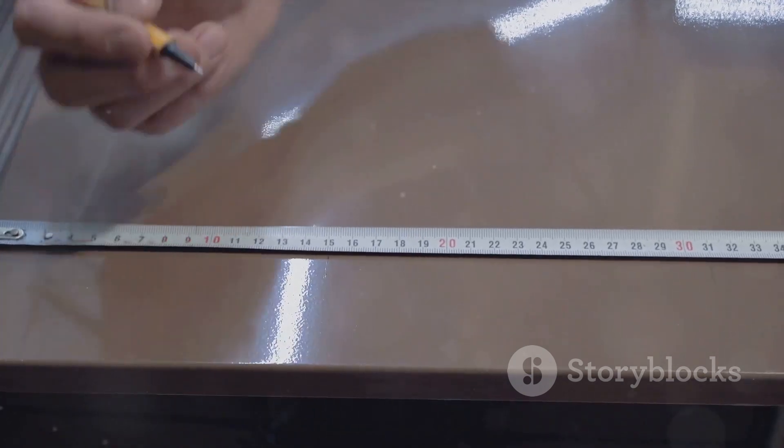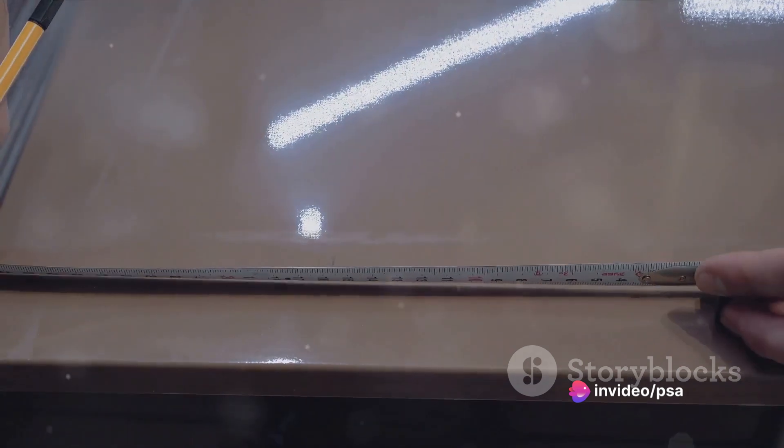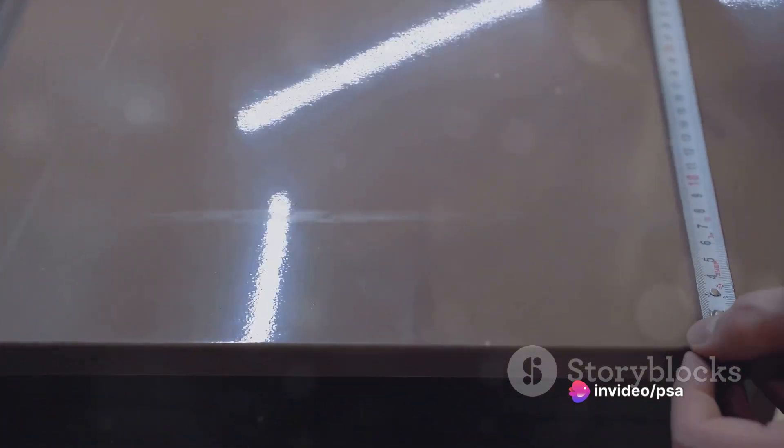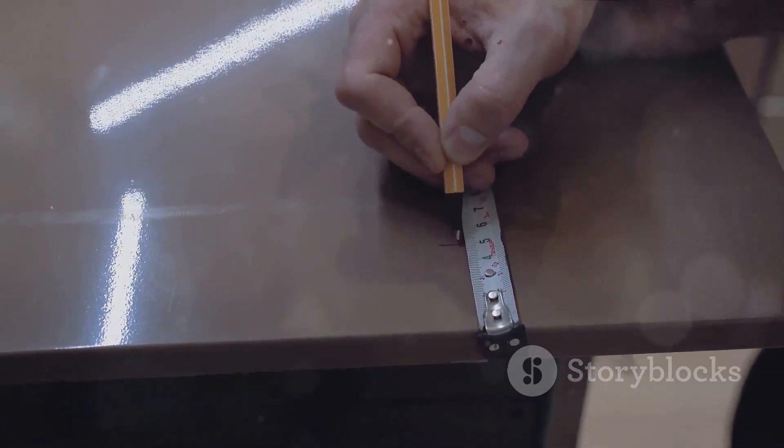Lastly, we have the tangent function, often shortened to tan. This is the sine of an angle divided by its cosine, or in other words, it's the length of the side opposite the angle divided by the length of the adjacent side.